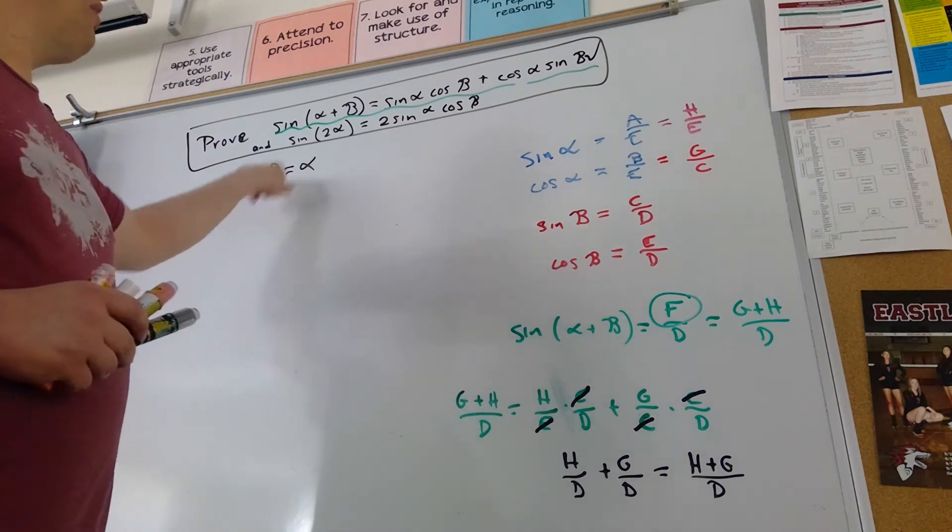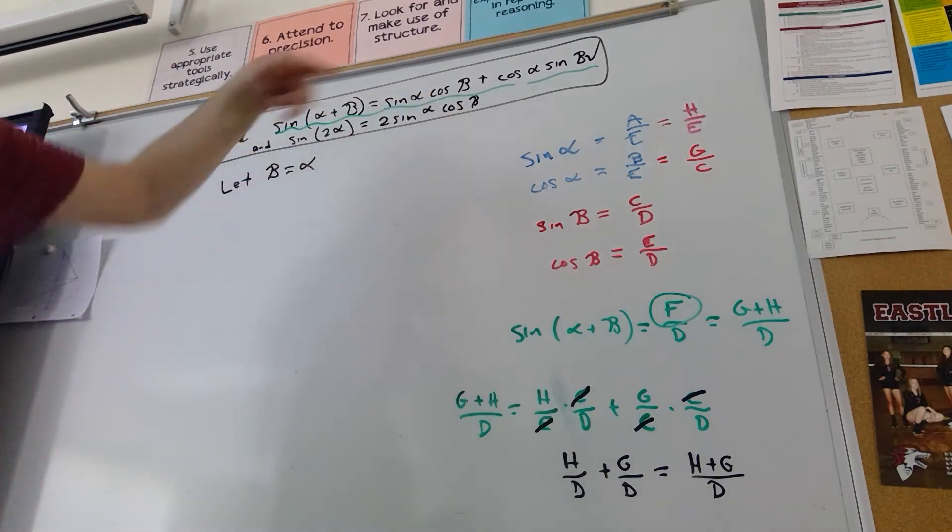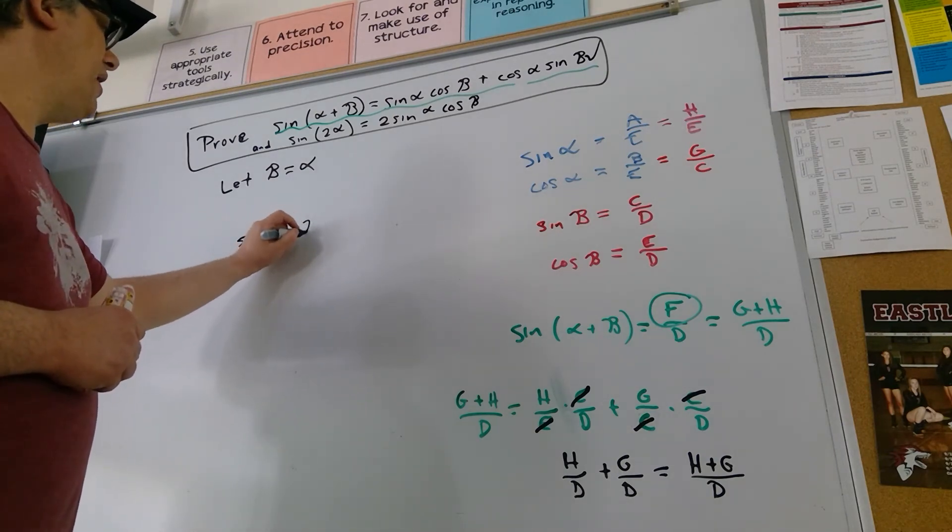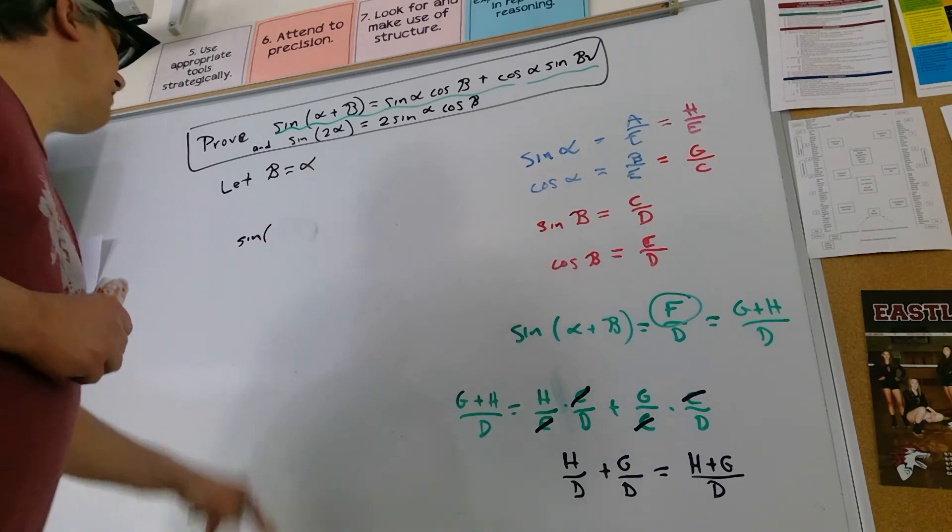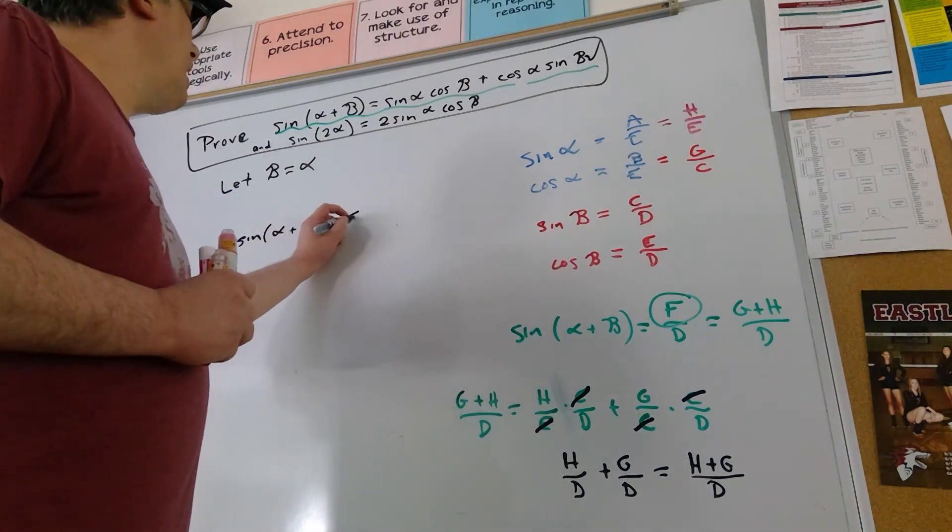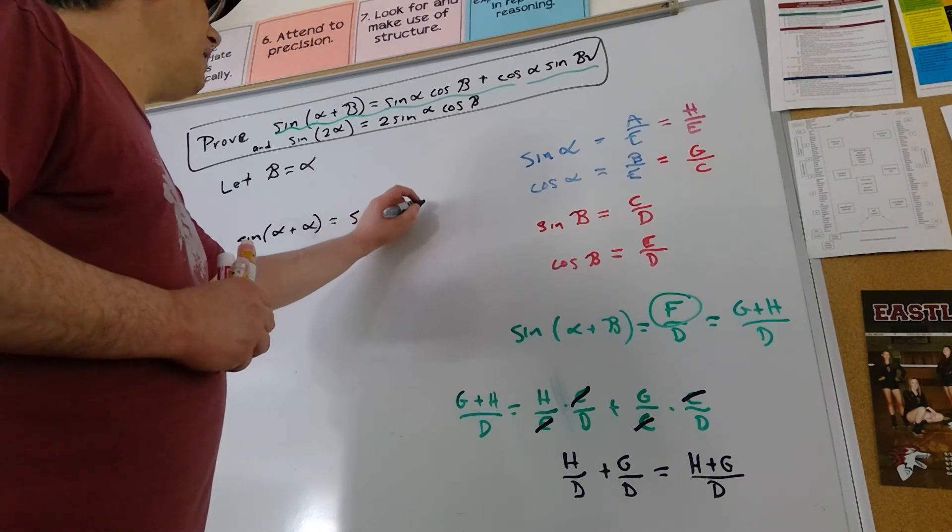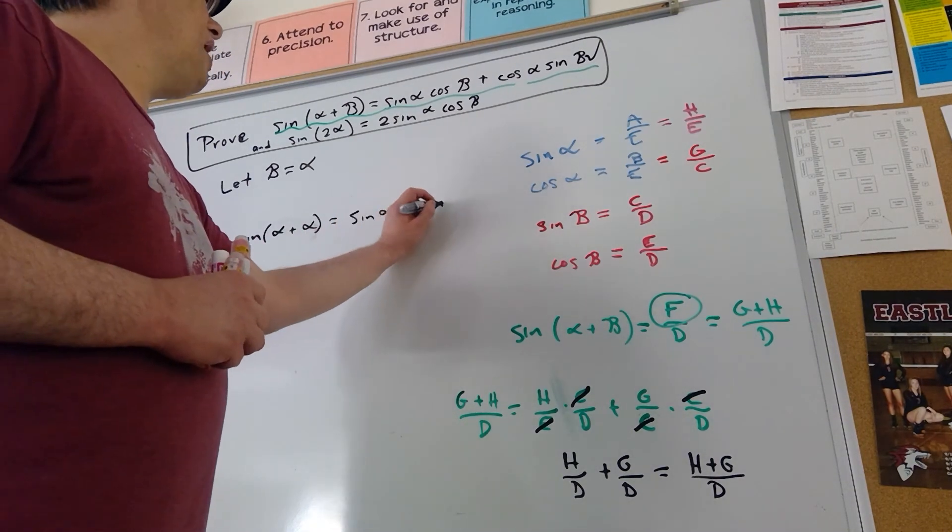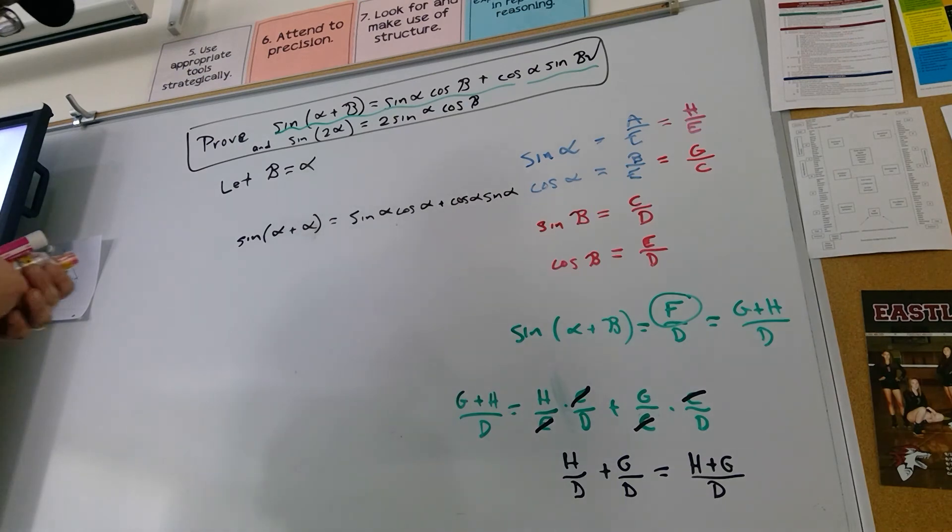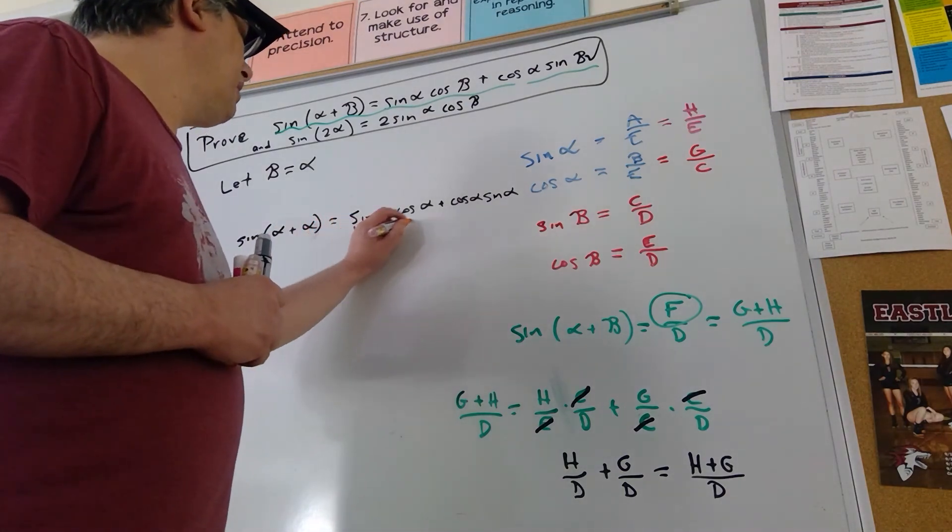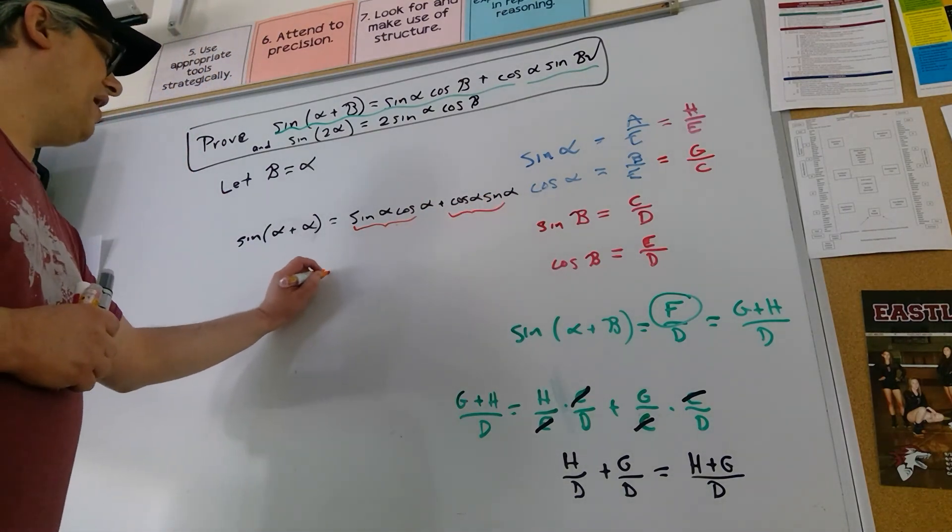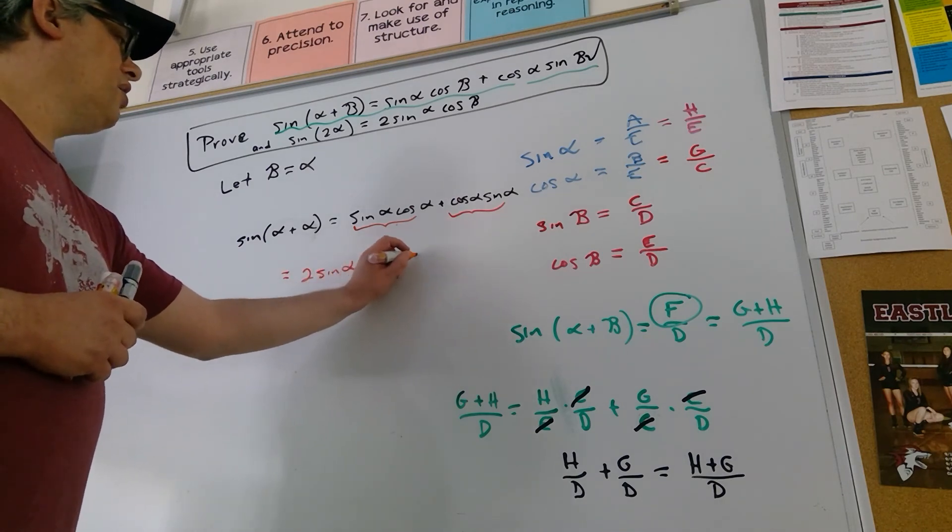So again, all I'm going to do now is every place where I see beta in this formula, I'm going to replace it with alpha, and that gets on both sides. So we get sine of alpha plus alpha. Every place I see a beta, it becomes an alpha. So sine of alpha, cosine of alpha, plus cosine of alpha times sine of alpha. And hopefully you can see that even though they're not in the same order, this is the same as this. So we've got two of the same thing. We've got equals two sine alpha, cosine alpha. We have done it. We've proved two things in one video.